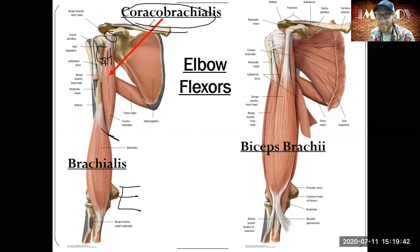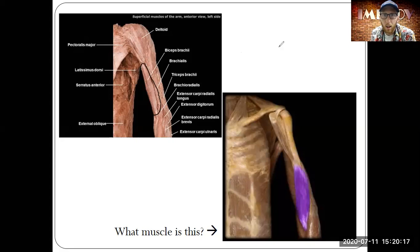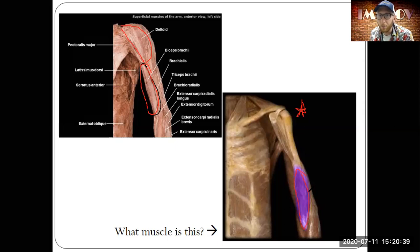Cadaver pictures show the biceps brachii, which is not as large as you might think. In larger individuals, there's a lot of skin and fat on top of the biceps giving it a larger look. We can see the biceps brachii in the brachium area, the deltoid covering the muscle as it goes deep. If we remove the deltoid, we can see the brachialis muscle specifically underneath.